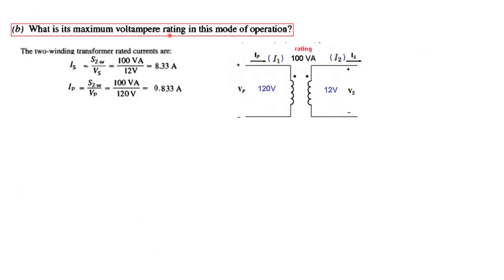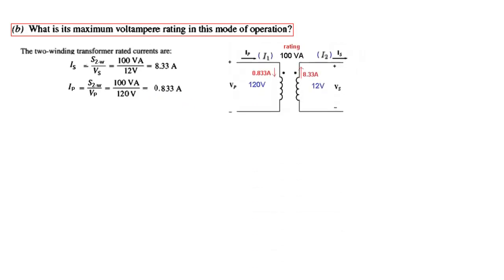What is the maximum volt ampere rating in this mode? We will exactly follow the previous example. This is the transformer. We find the currents. Current will be S2 or the power of the two windings. So that is 100 VA divided by the secondary voltage 12. So 8.33 A and the primary also the power rating divided by the primary voltage 0.833 ampere. And so these are the two currents we have shown here.